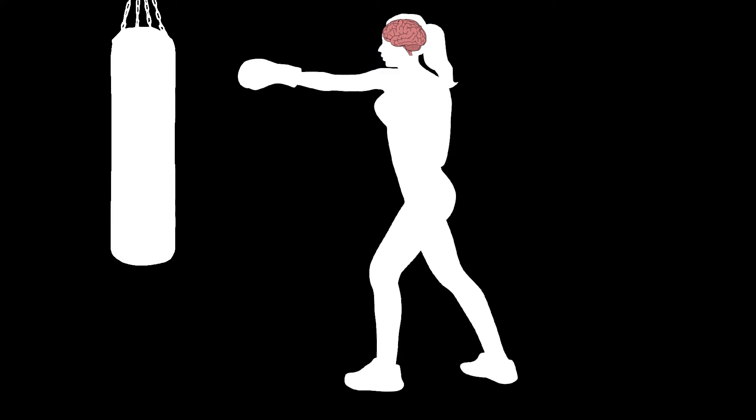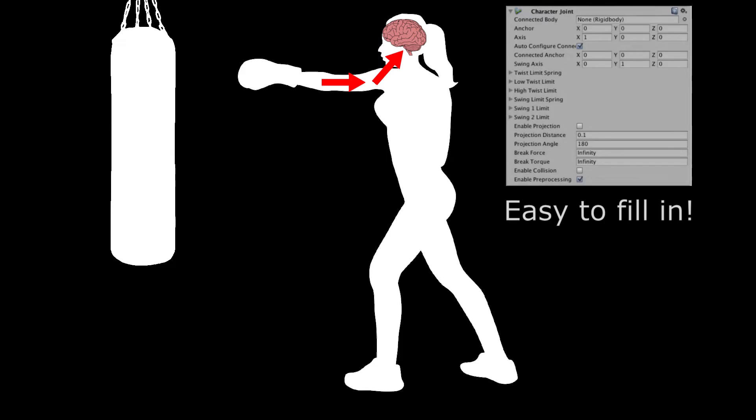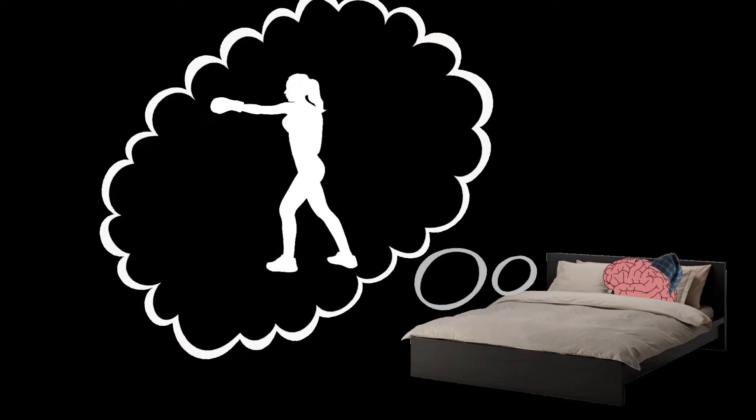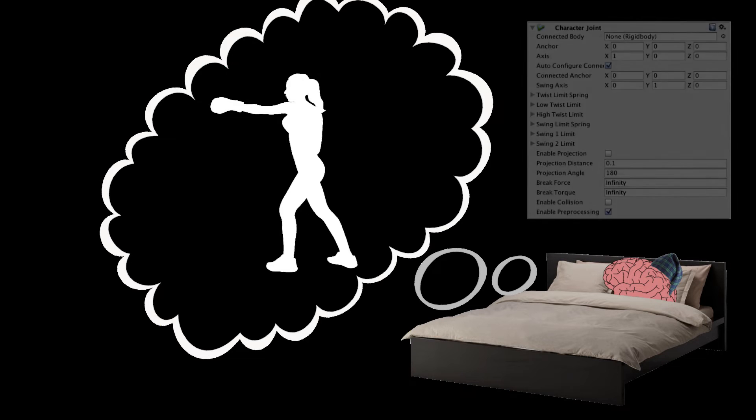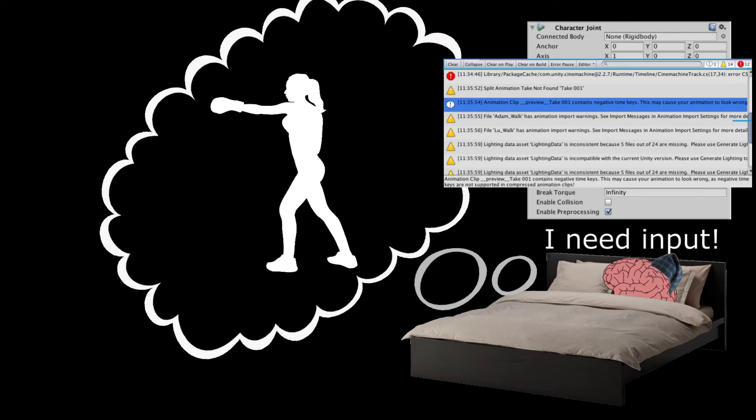When you throw a punch when you are awake, the sensory feedback of your entire action allows your brain to calculate weight, strength, and motion. In a dream, your brain has none of this, and as a result, it needs to go off memory and make things up as it goes along.